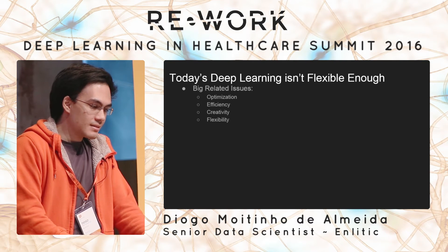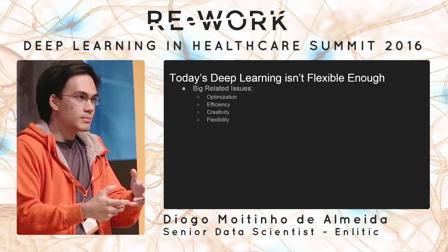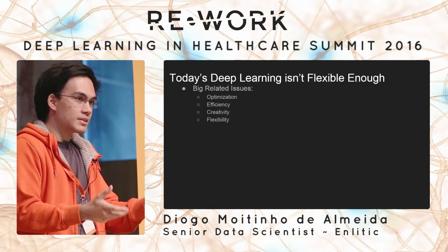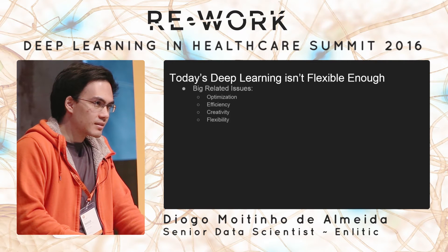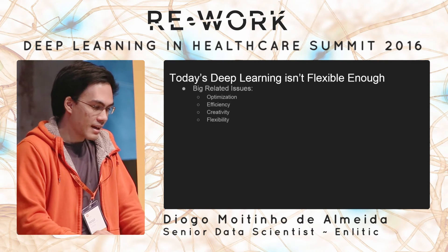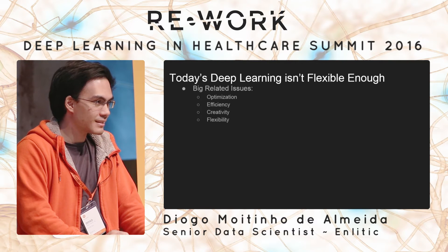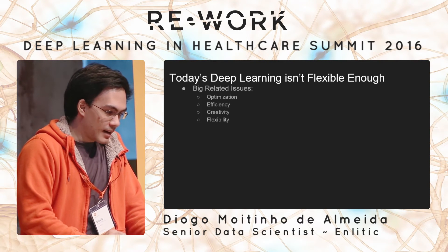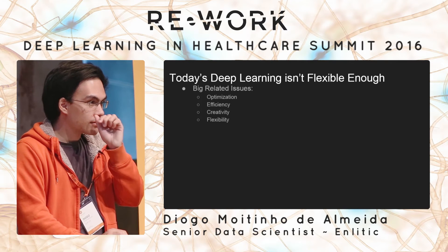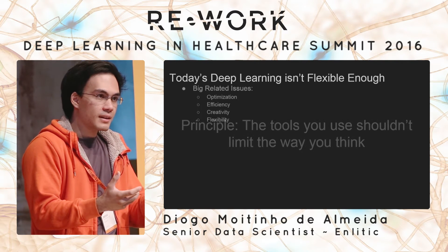Efficiency is another issue — not just code running fast, but parameter and data efficiency. If you're willing to give up back-propagation and use things like evolutionary algorithms, you can get the same kinds of architectures learned in much fewer parameters — I've seen estimates of as much as two orders of magnitude more parameters than necessary. Creativity is obviously a big issue for research, and flexibility is something I work on a lot, since as an engineer there are a lot of real-world limitations into the kinds of things you can build in current frameworks.